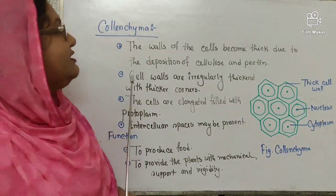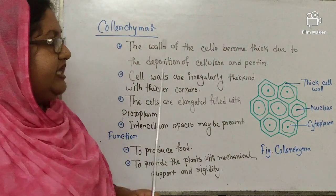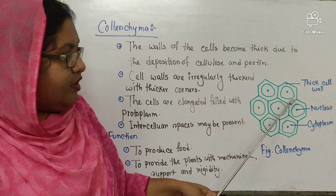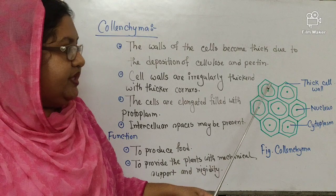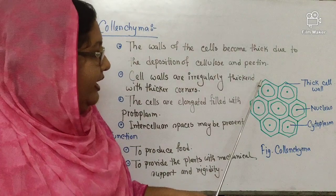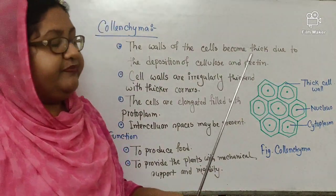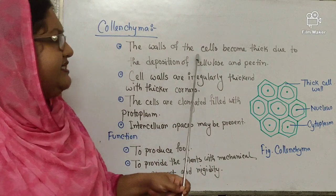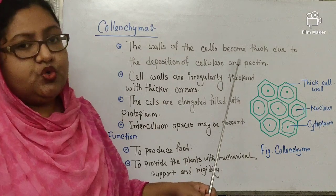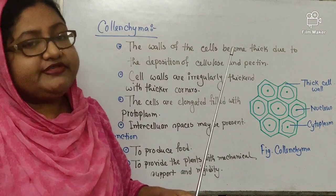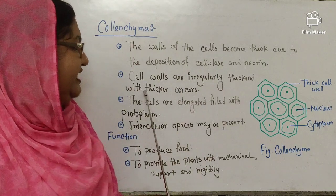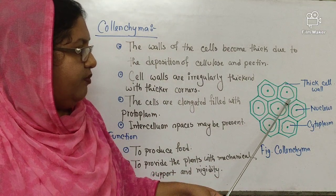Now, the characteristics of collenchyma. In the diagram you can see that the corners are comparatively thicker than the other sides. The cell walls are irregularly thickened and the corners are more thick. The walls of the cells become thick due to the deposition of cellulose and pectin. Cell walls are irregularly thickened with thicker corners, as you can see in the diagram.